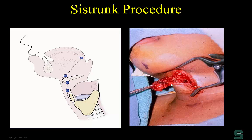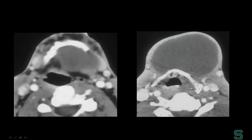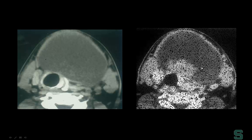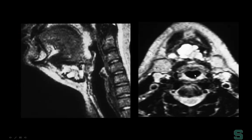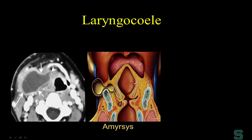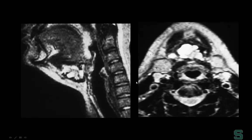The surgical approach is a Sistrunk procedure, where a cuff of tissue is taken following the tract back through the anterior neck. Thyroglossal duct cysts can be very large. Importantly, a thyroglossal duct cyst with a diffusely enhancing internal mass raises concern for papillary thyroid carcinoma — which has been associated with thyroglossal duct cysts, occurring in roughly six to seven percent of cases. We must be aware of this association.